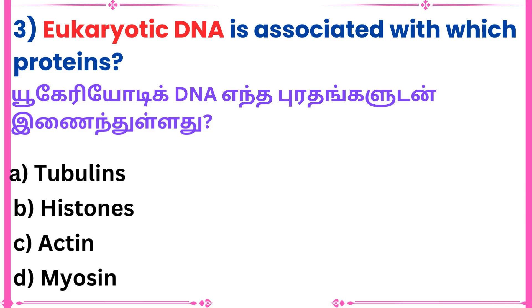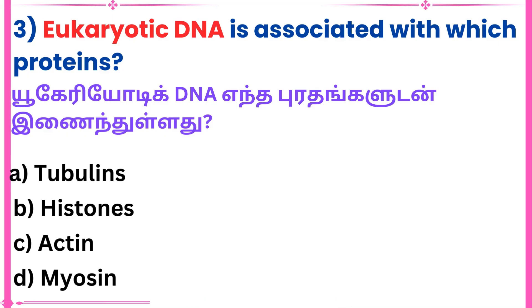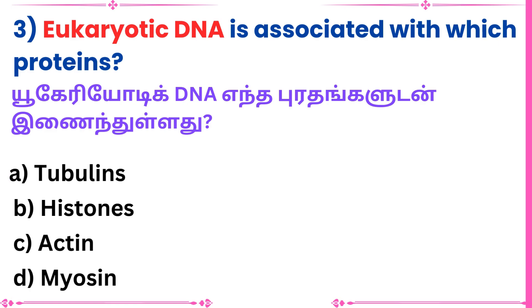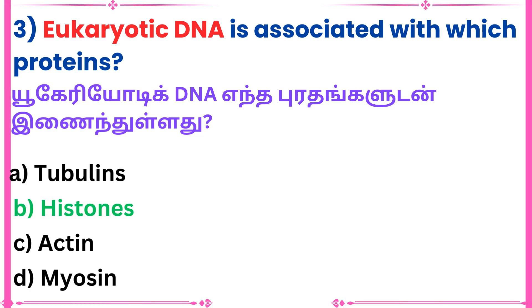Third question: Eukaryotic DNA is associated with which proteins? Answer: Histones.